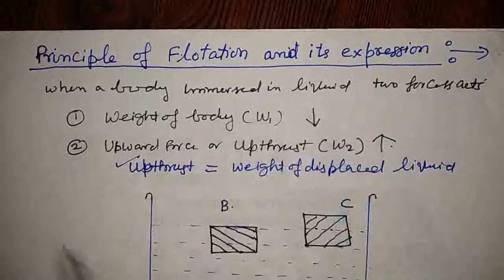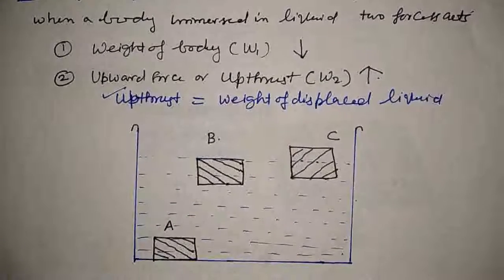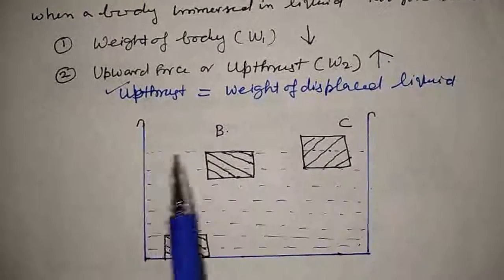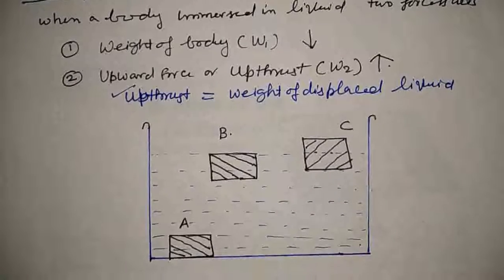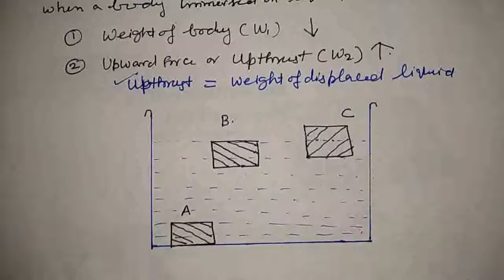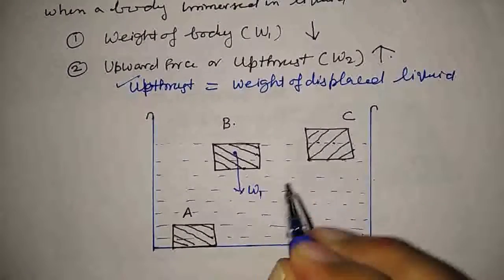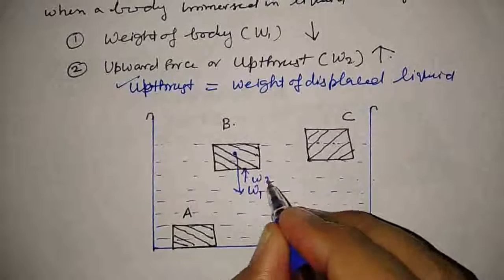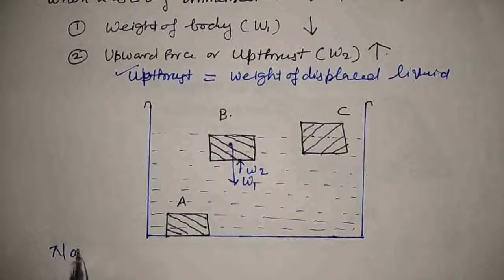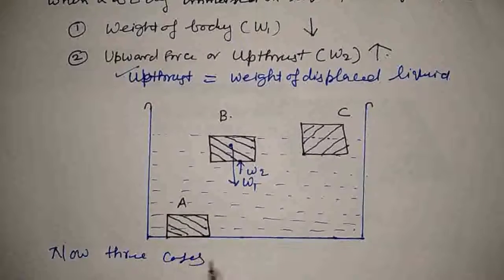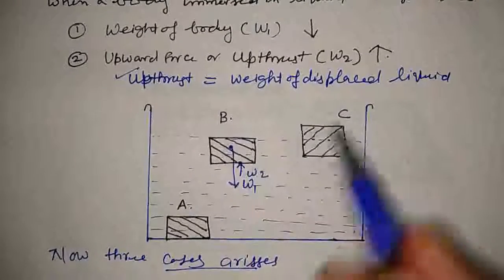Now see how these forces are responsible for a floating body. To understand the fundamentals in detail, see this diagram carefully. Here in the container, liquid is filled and we are immersing a body. There are three conditions of immersing, with two forces acting on it: the weight acting downward and upthrust W2 acting upward. These three cases — A, B, and C — we will understand using three different diagrams.